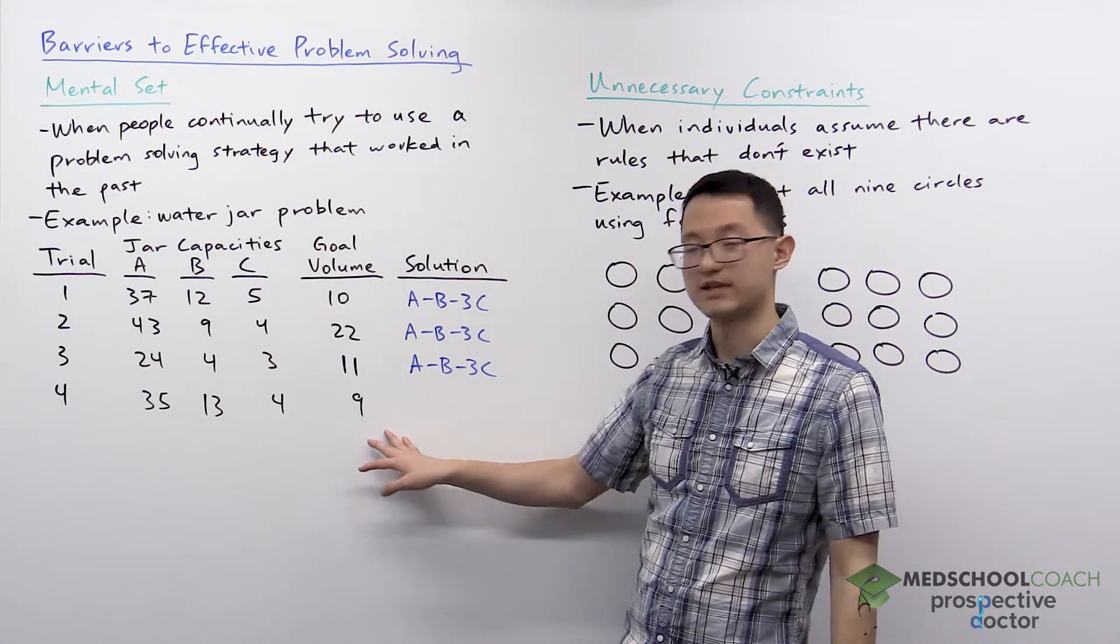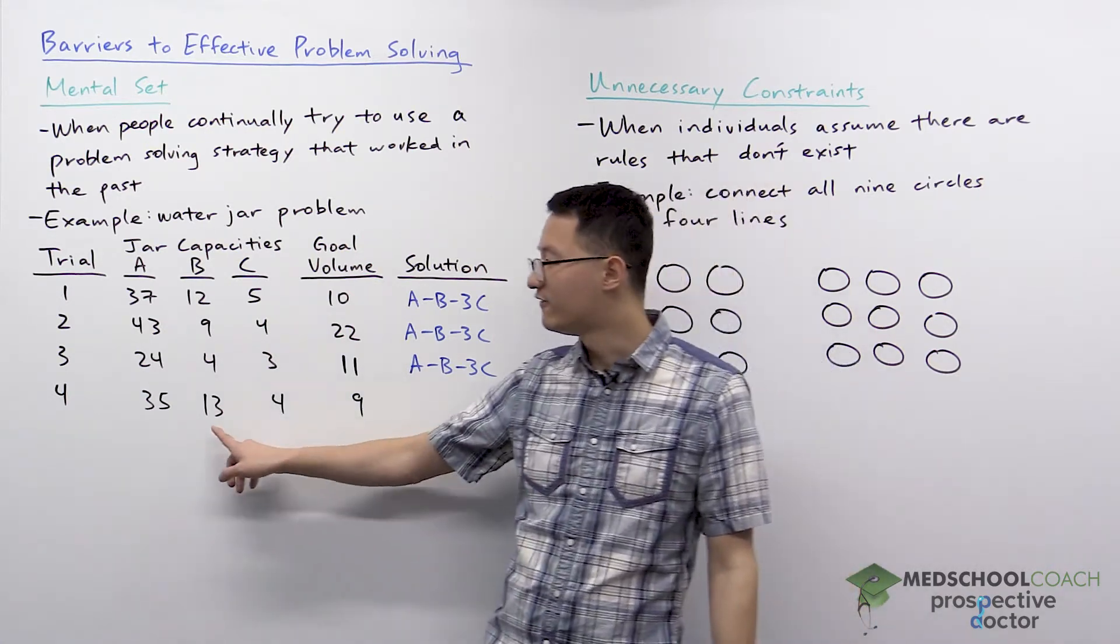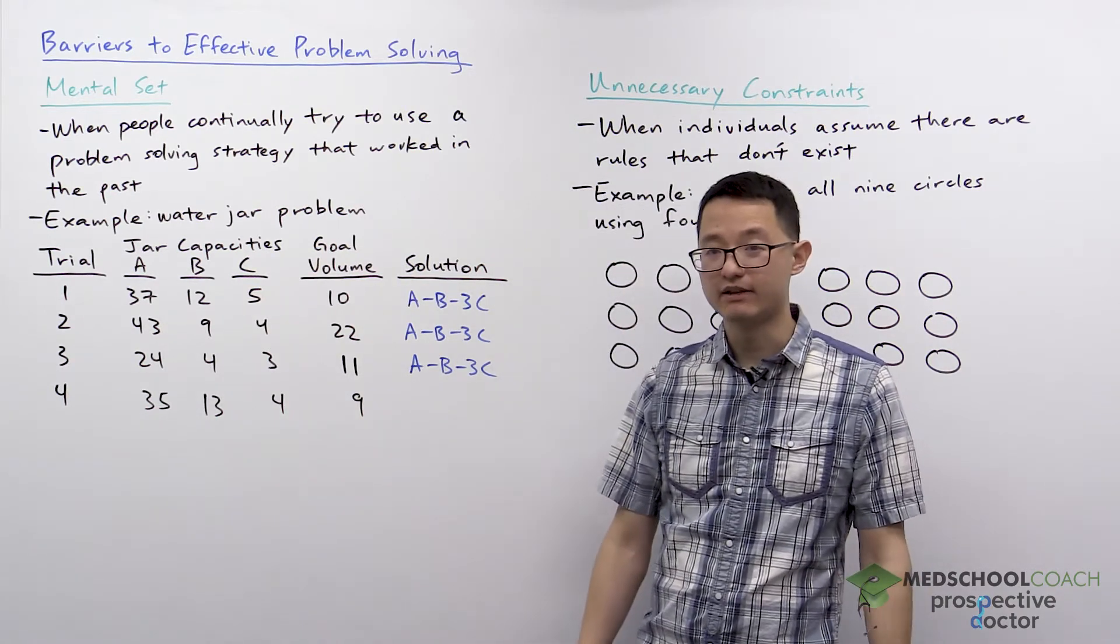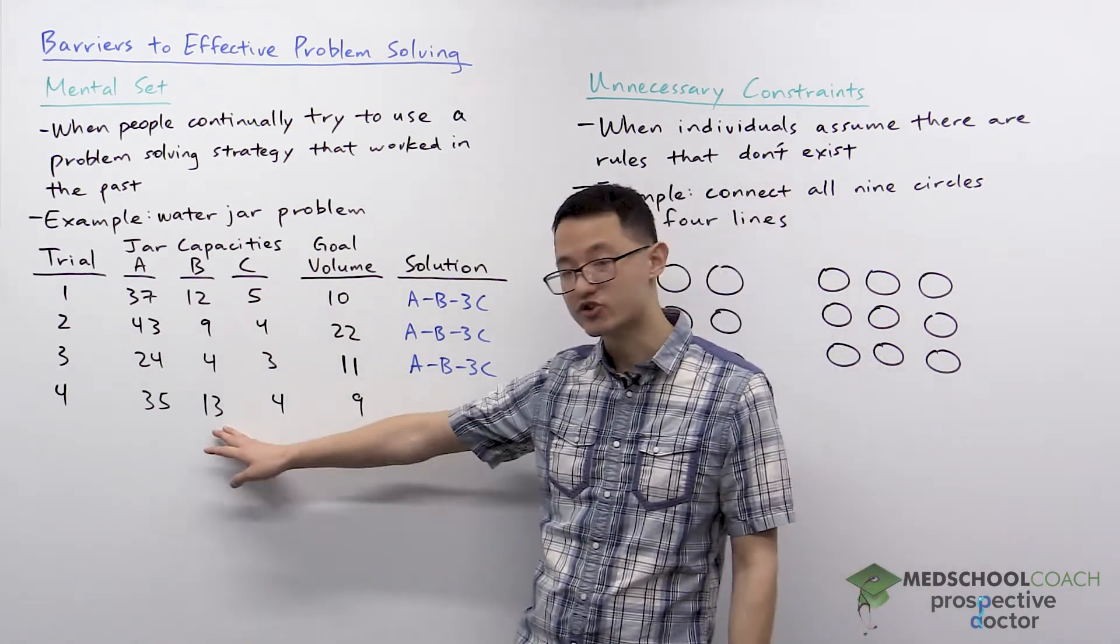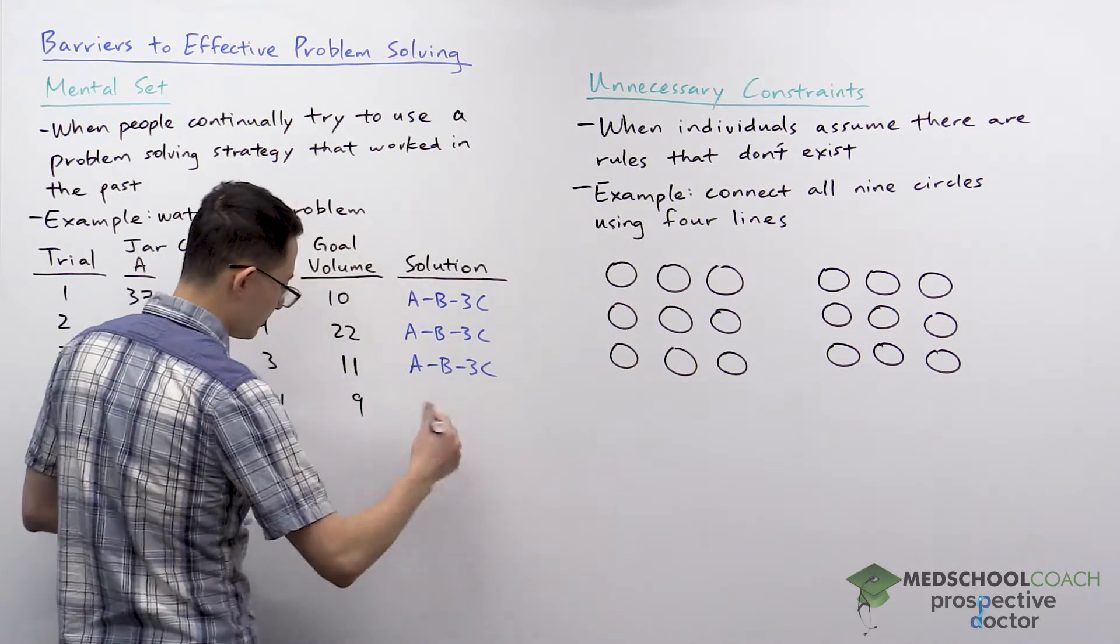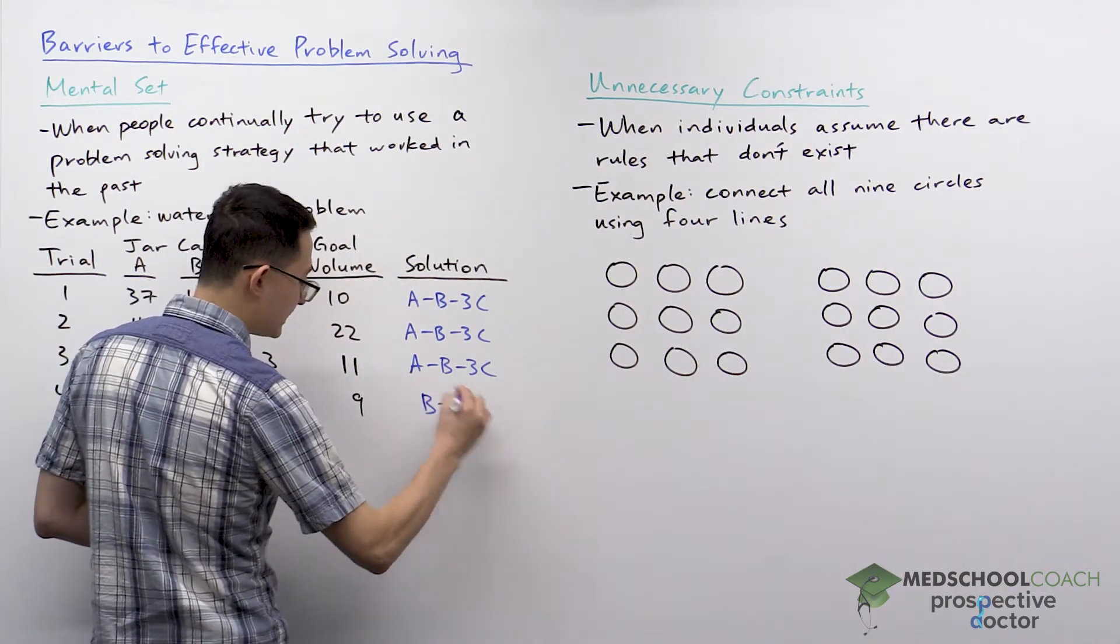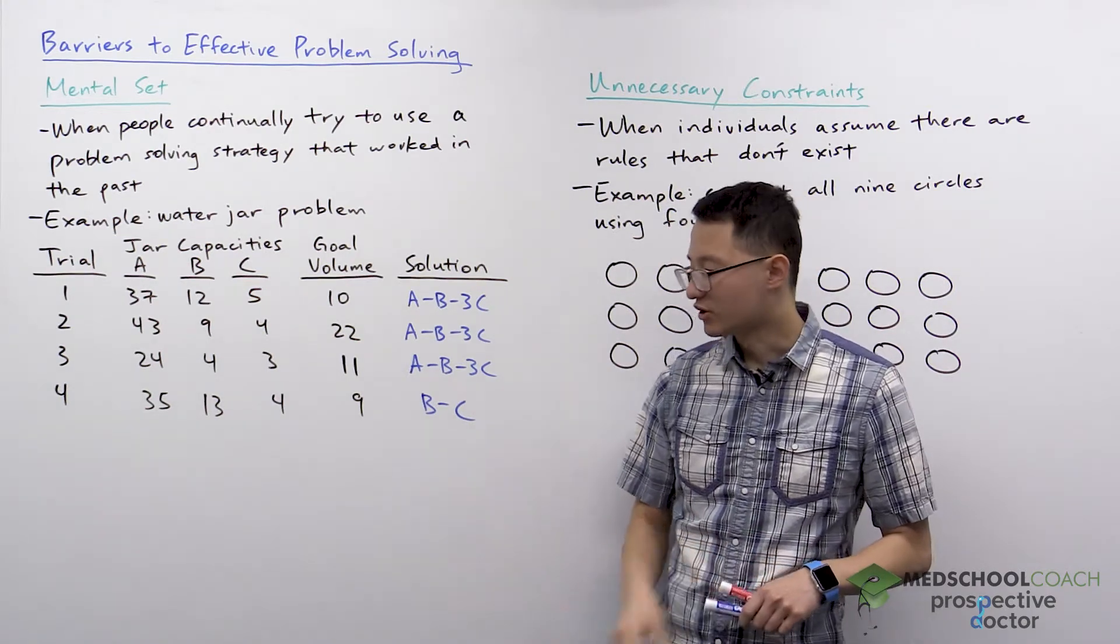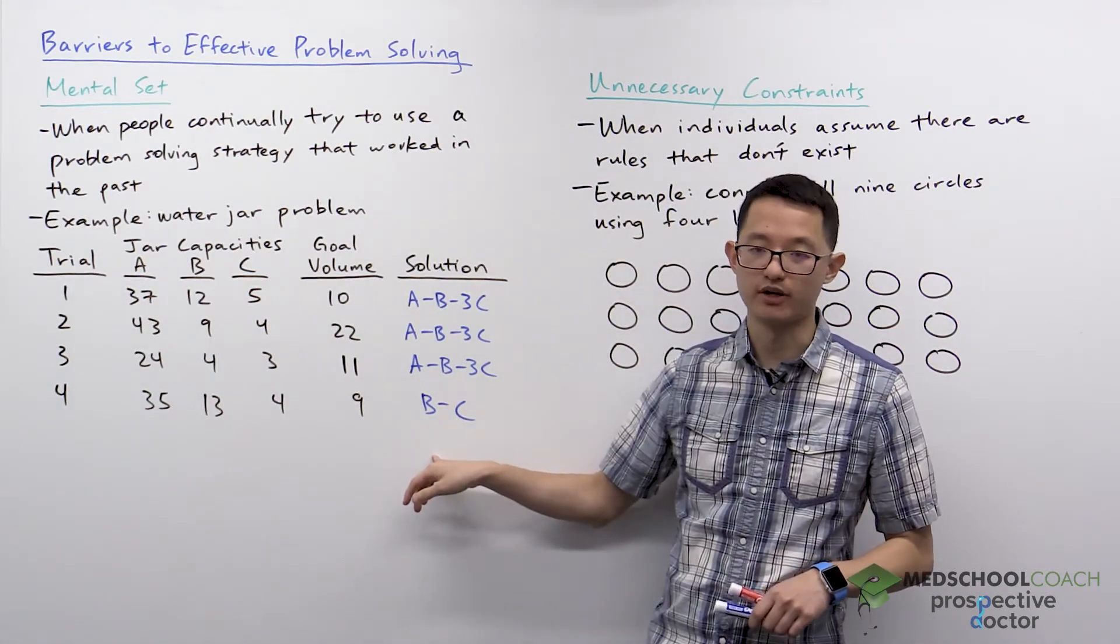If you actually look at this question, it's quite simple. You can simply fill up jar B, then pour it into jar C, and that'll leave you with nine cups of water in jar B. So arguably, trial four is the easiest, but because of mental set, people can struggle to solve this last trial.